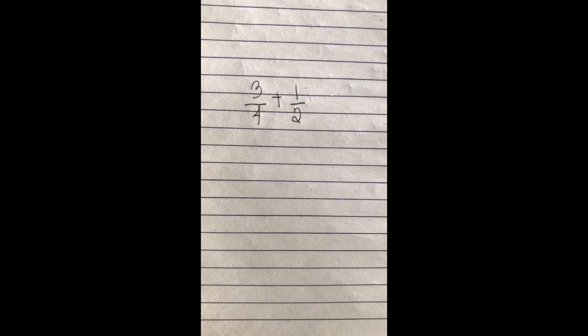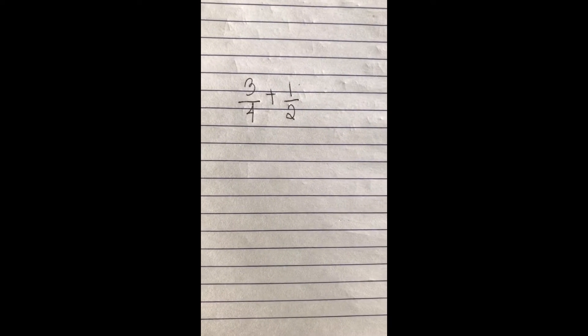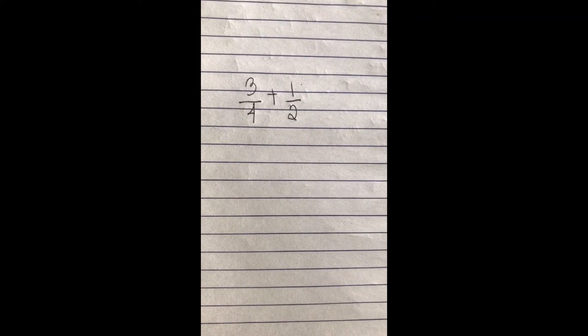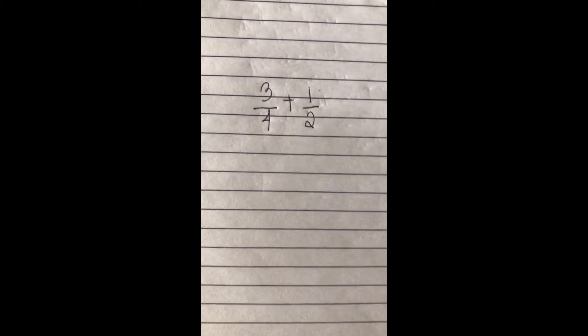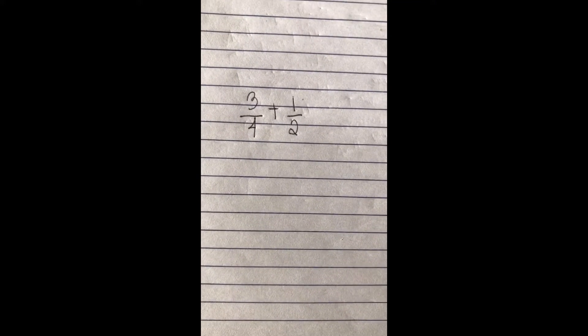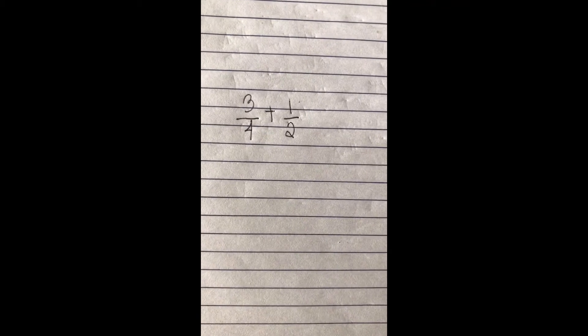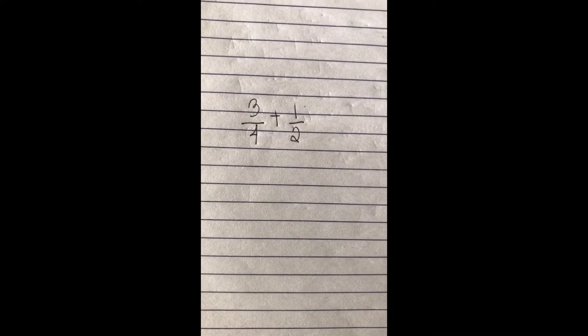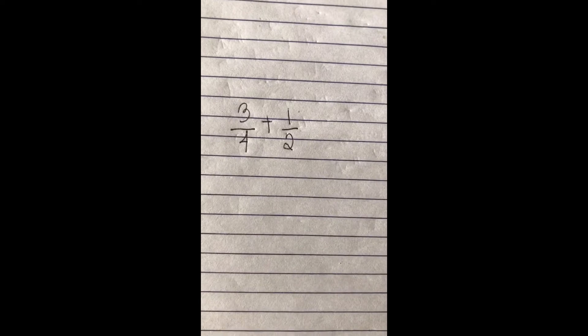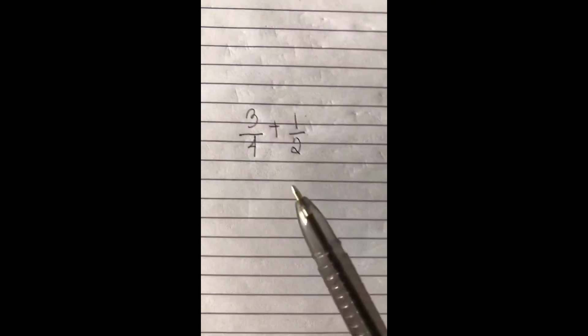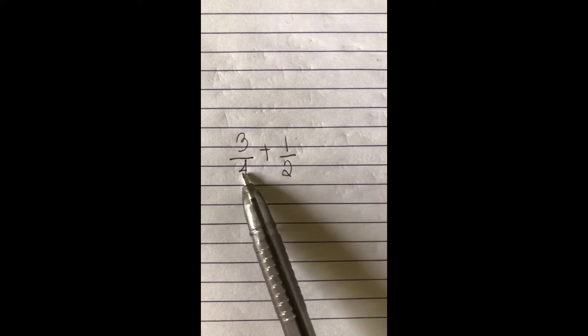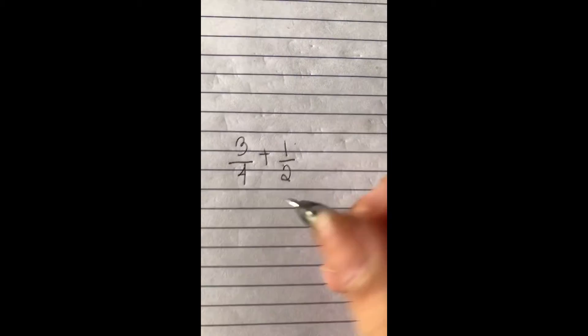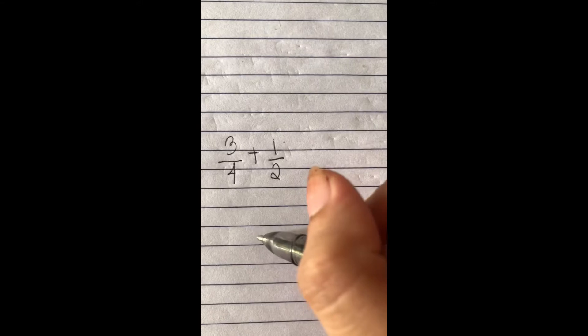Let's have 3 over 4 plus 1 half. In this sample, our numerators are 3 and 1, and our denominators are 4 and 2. So all we need to do is multiply the denominators, which is 4 and 2. So let's have 4 times 2, so it gives us 8.